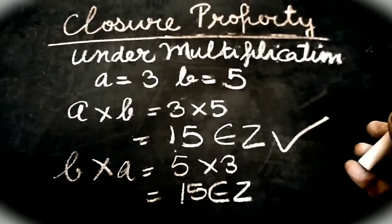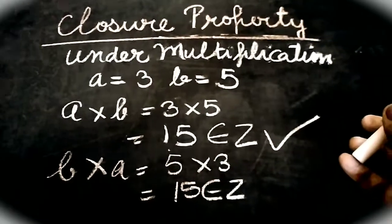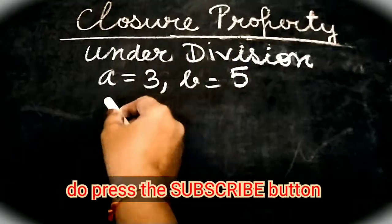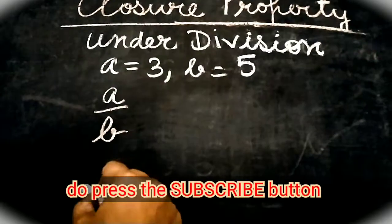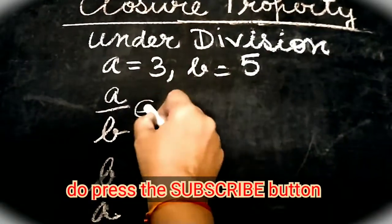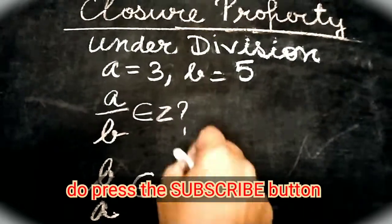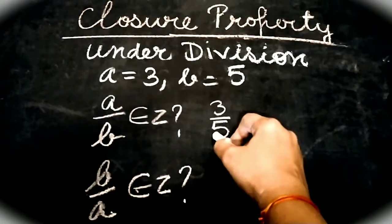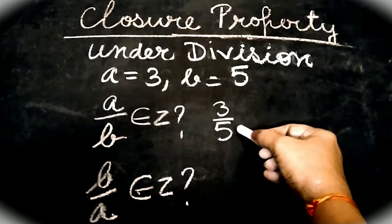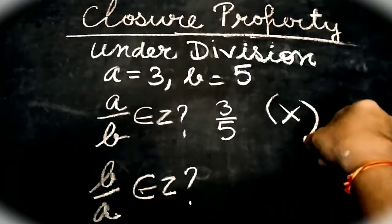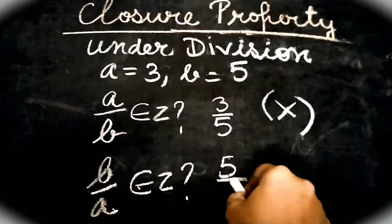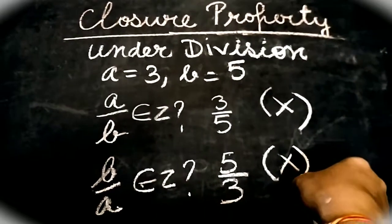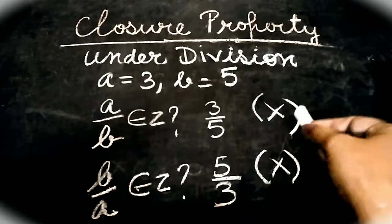Now let us check whether closure property holds under division or not. Whether I divide A by B or I divide B by A, the answer should be an integer. A by B means 3 by 5, which is a fraction — it is definitely not an integer. Same with B by A: 5 by 3 is again a fraction and is not an integer. So closure property does not hold under division because the answer is not coming out to be an integer.